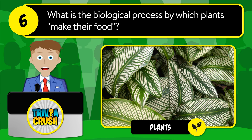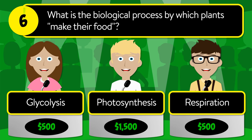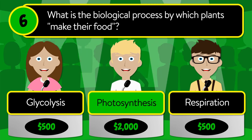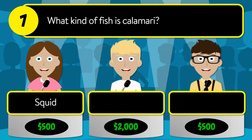Question number six: what is the biological process by which plants make their own food? Is it glycolysis, photosynthesis, or respiration? The correct answer is photosynthesis.